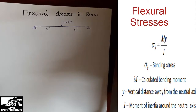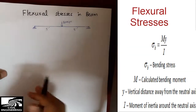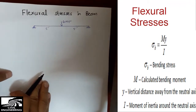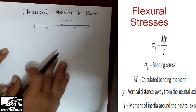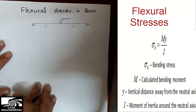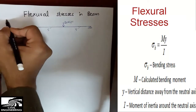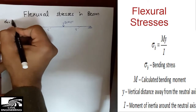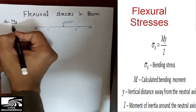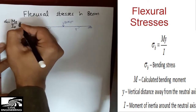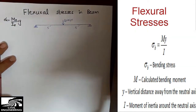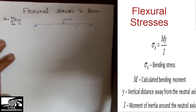Hello guys, today we are going to talk about flexural stresses in beams. This is a really important topic, and in this lecture we will talk about how to find flexural stresses at any point in a beam. The flexural stresses are denoted by the formula: Sigma X equals the moment divided by the moment of inertia, multiplied by the Y distance.